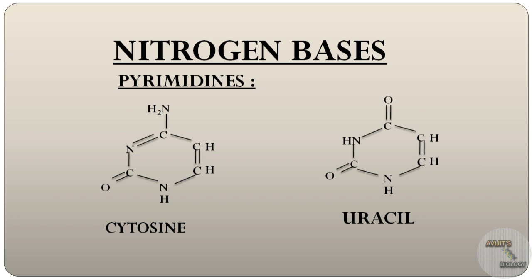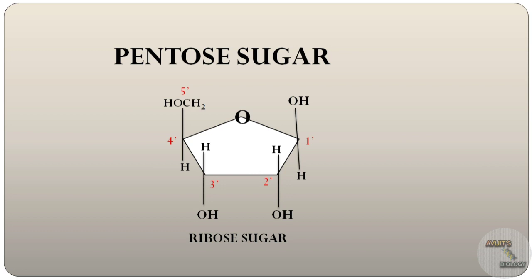The pentose sugar of RNA is called the ribose sugar, which has two OH groups at the 2 prime and the 3 prime position. But in case of deoxyribose sugar, we have a hydrogen group at the 2 prime position and a hydroxyl group at the 3 prime position.